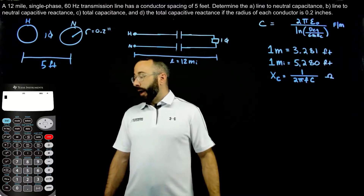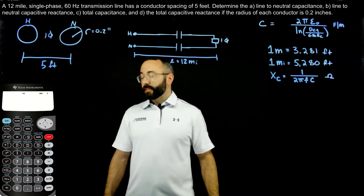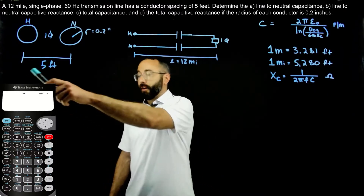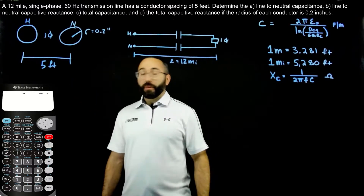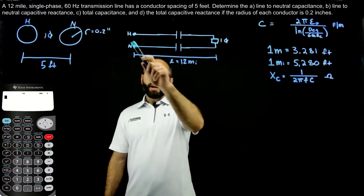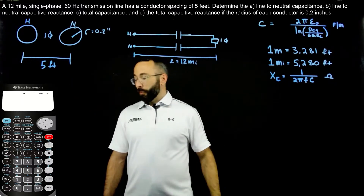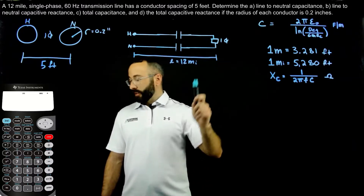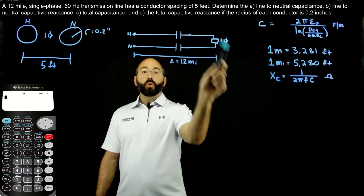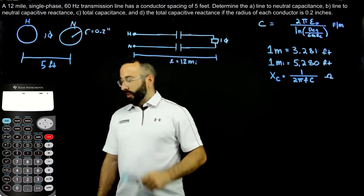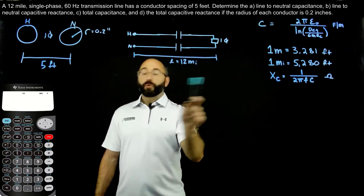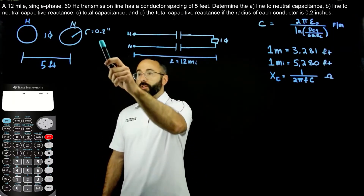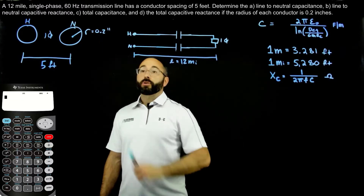The problem states: a 12-mile single phase 60 hertz transmission line has a conductor spacing of 5 feet. Determine A, the line-to-neutral capacitance; B, the line-to-neutral capacitive reactance; C, the total capacitance; and D, the total capacitive reactance — if the radius of each conductor is 0.2 inches.